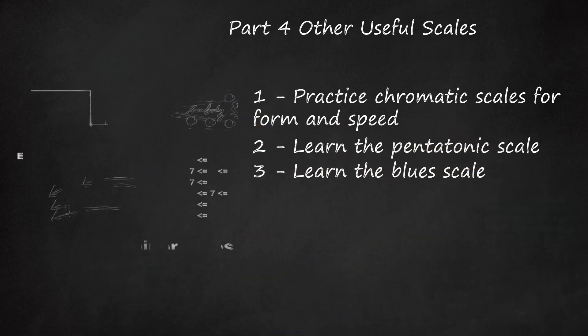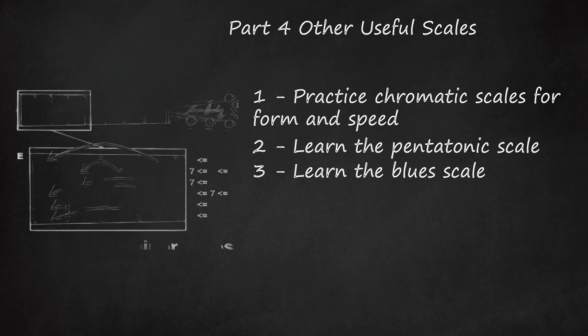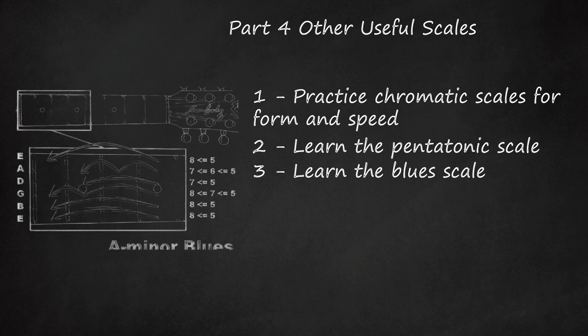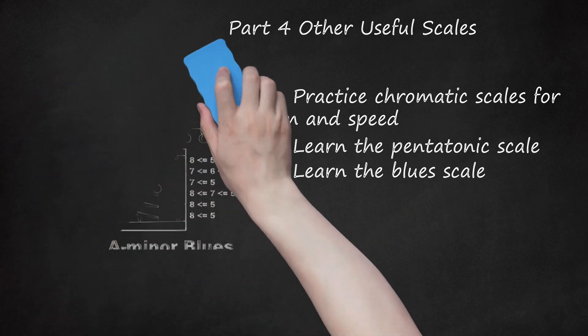Learn the Blues Scale. Once you know the minor pentatonic scale, it's very easy to play the related blues scale — all you need to do is add the flat 5th scale degree to the minor pentatonic, giving you a 6-note scale. For example, the A blues scale: A (fret 5), C (fret 8) on the low E string; D (fret 5), E-flat (fret 6), E (fret 7) on the A string; G (fret 5), A (fret 7) on the D string, continuing across the higher strings. The flat 5th is known as the blue note. It sounds a little discordant by itself, so when soloing, use it as a leading tone — play it on the way to another note, and don't hang on it too long.